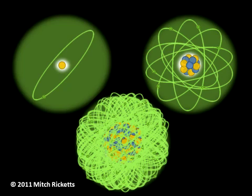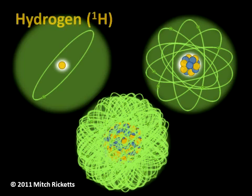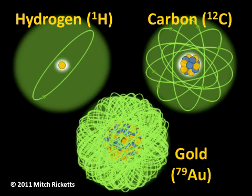Atoms are small particles of matter. Every atom belongs to a particular element such as hydrogen, carbon, or gold. Over 90 naturally occurring elements have been identified and many more have been created in laboratories.